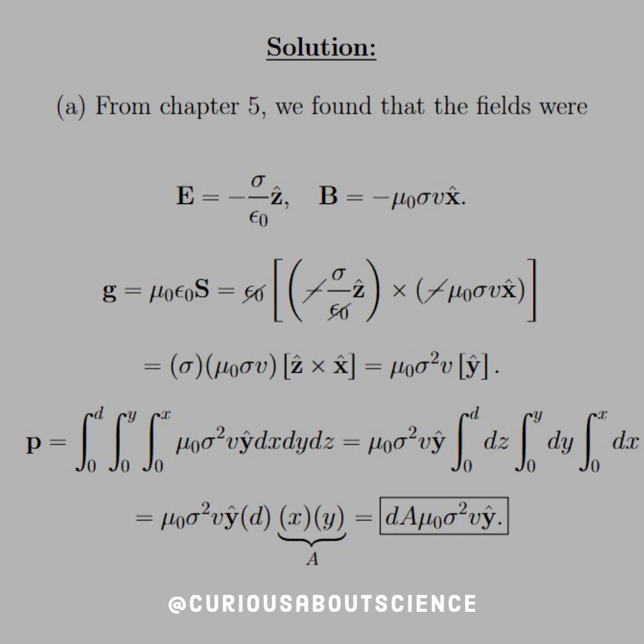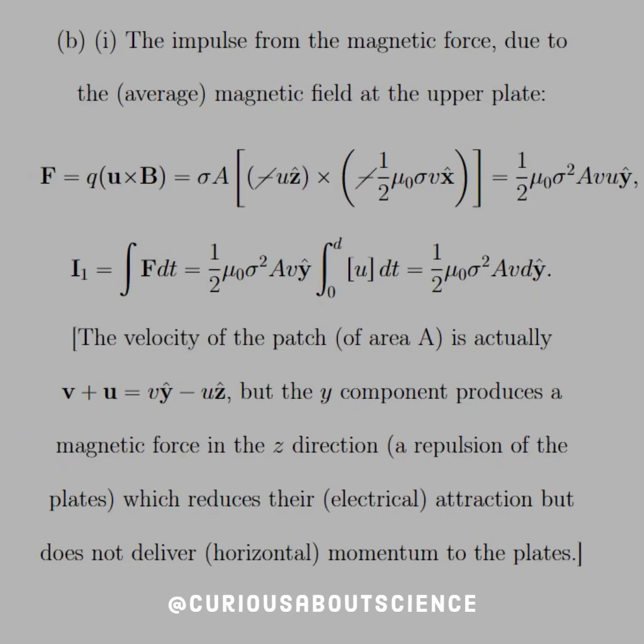All right, so we have some momentum for the sake of some area A. Now for part B, we can use the impulse from the magnetic field due to the average magnetic field at the upper plate. So F equals q times u cross B. Shove it on through for what we found. Remember that q was the surface charge times the area of interest, which is why we found a formula for last part. Plug this on through, take the cross product, and you see that u equals negative uz, since it's going downward to the bottom plate. And then a negative sign from the B field, and you're good to go.